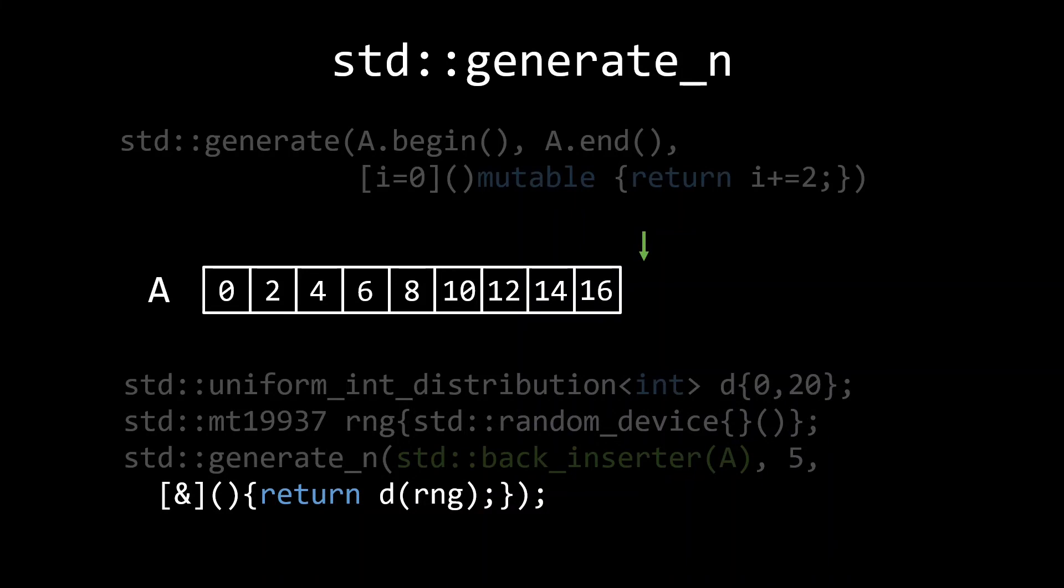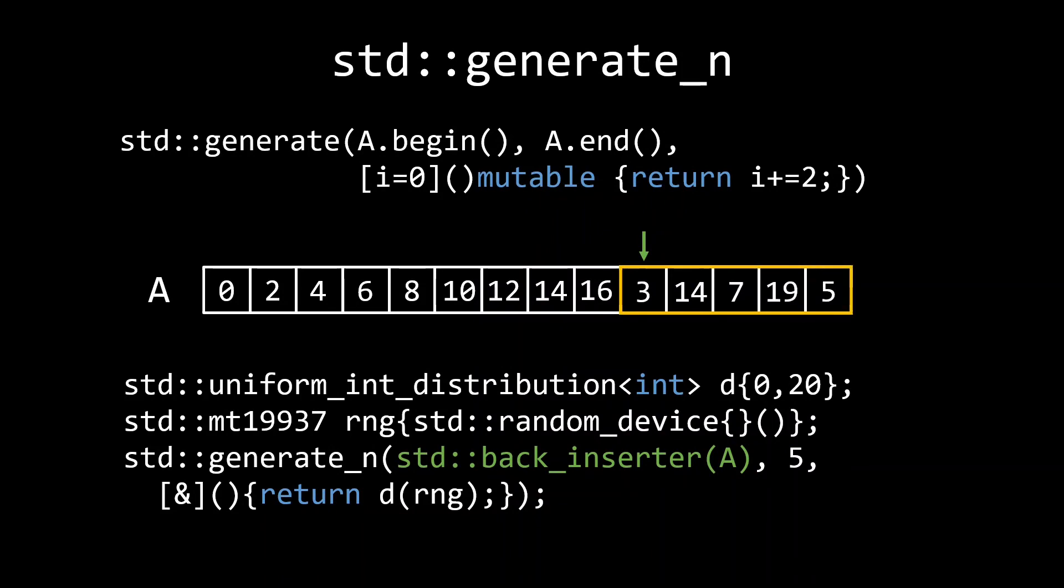RNG is passed to d, which gives us a random number drawn from the uniform distribution. The reason we need to wrap this in a lambda is because std generate_n expects a function without parameters, so we can't pass the distribution directly.